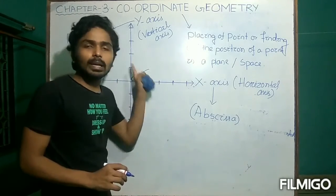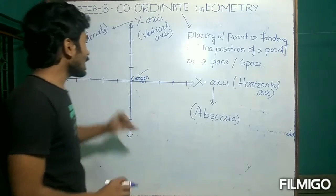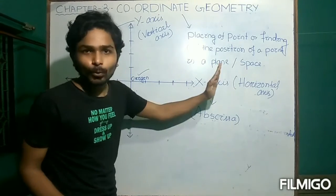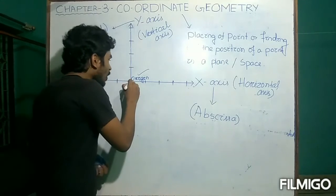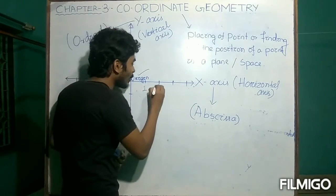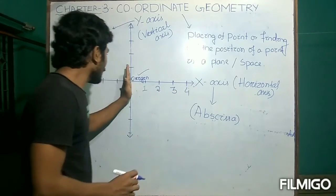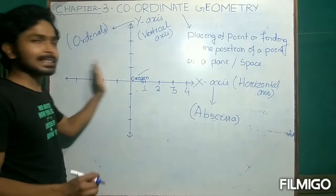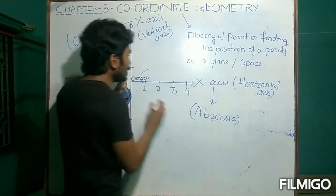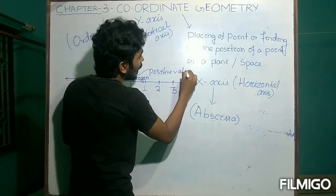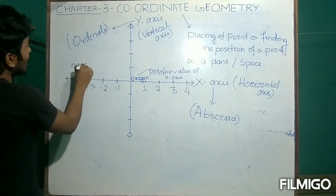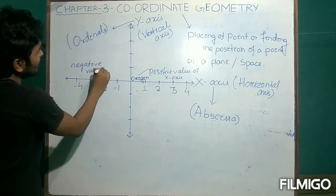The origin is the point where both x and y-axes meet. On a number line, if we move towards the right of 0 — which is the origin — we get only positive values of x. If we move towards the left of 0, we get negative values of x. So, towards the right we have positive values of x, and towards the left we have negative values of x.